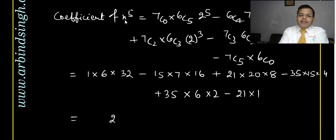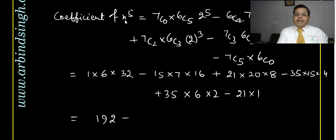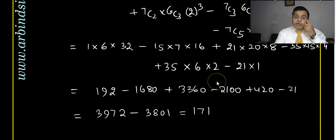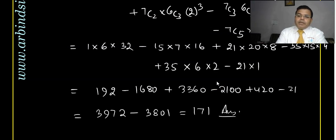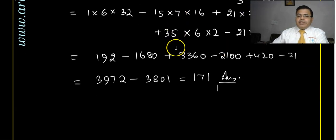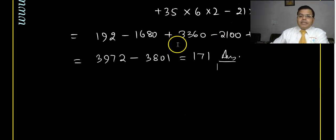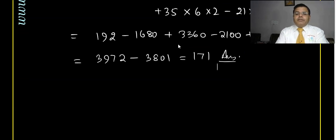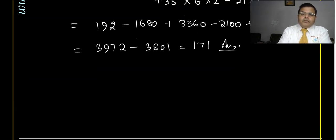After calculating all these terms, the coefficient of x^5 comes out to 171. This is the answer for question 3.